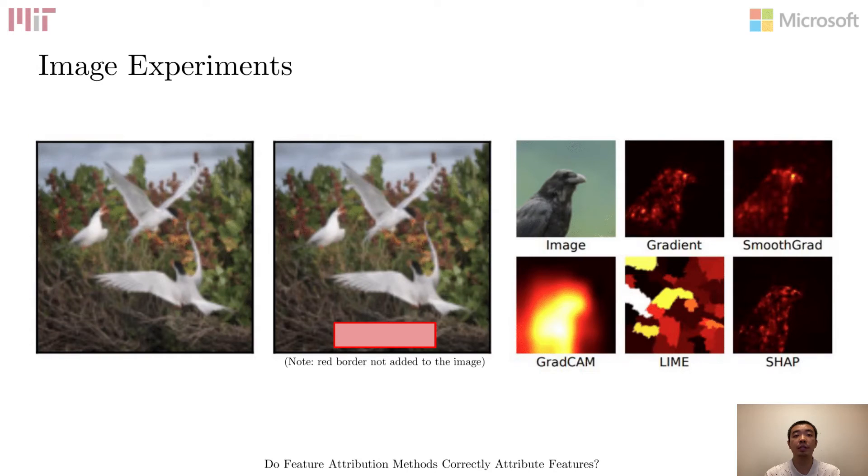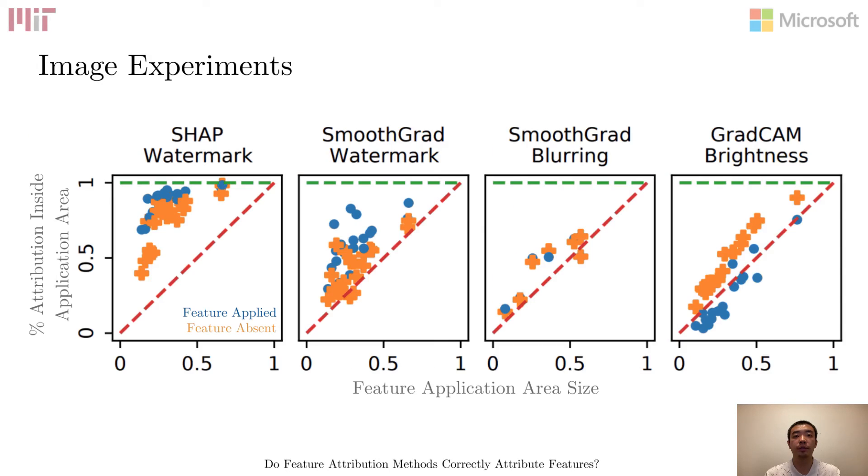Thus, we compute the attribution assigned inside the box as a percentage of total attribution. Note that a larger box area should naturally lead to a higher attribution percentage, so we plot it against the area size. In the plot, the red line represents the behavior of a random saliency map, while the green line represents that of an ideal one. Every marker represents an independent training run evaluated on images with features either applied or absent. As we can see, the success rate varies widely both for feature types and for explainer methods. Alarmingly, some combinations are not much better than the random baseline.